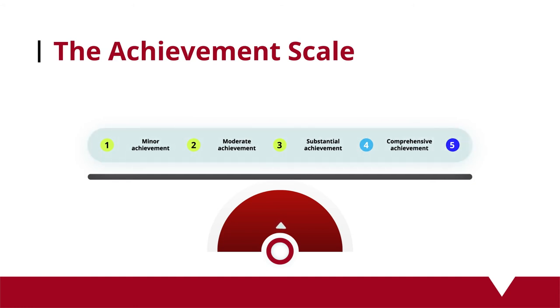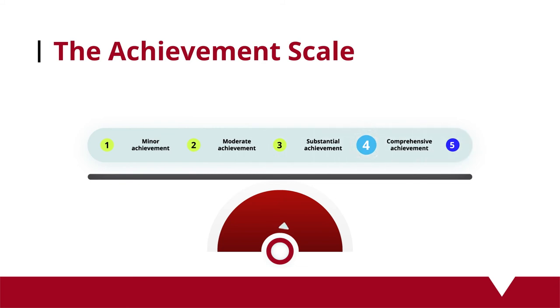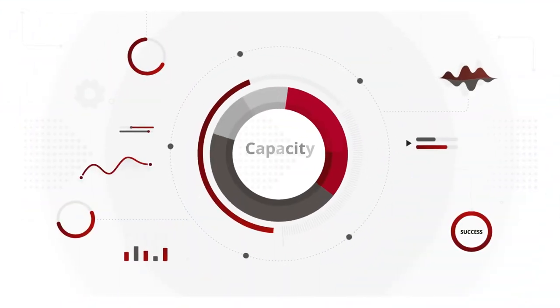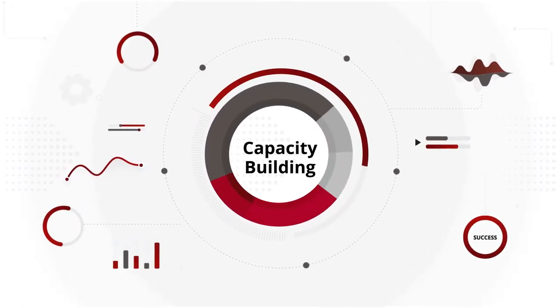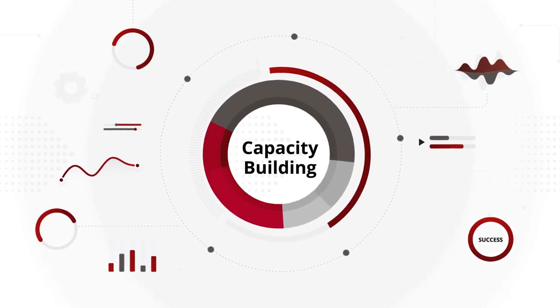Here is how to interpret scores. An average score of 1 to 2 is considered a minor achievement. 2.01 to 3 indicates moderate achievement, requiring priority interventions to improve institutional and operational capacities. An average score of 3.01 to 4 is a substantial achievement. And finally, 4.01 to 5 is a comprehensive achievement. The score can be used as a gauge for prioritizing capacity-building interventions to further improve the provision of humanitarian actions to people affected by disasters.